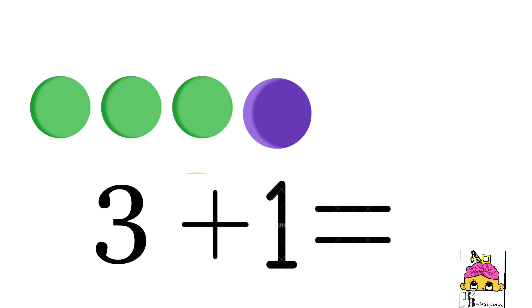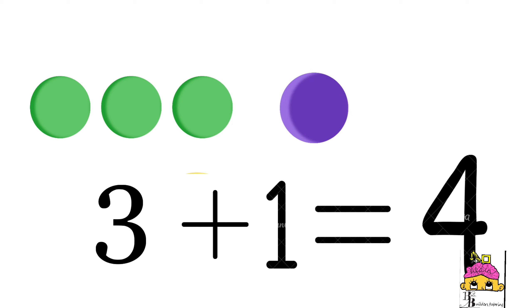So 3 plus 1, you're taking 3 counters and adding 1 more. What's the answer? 3 plus 1 is now equal to 4.